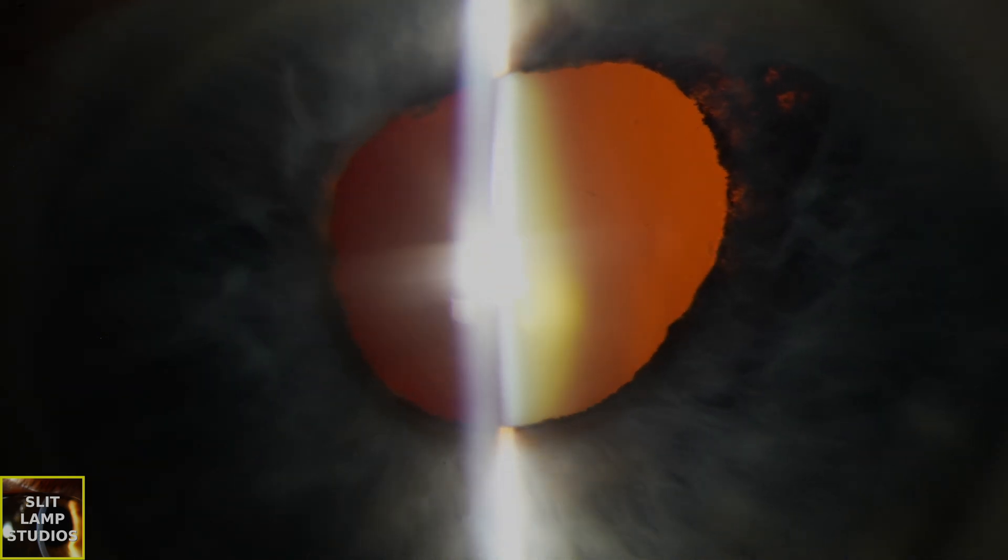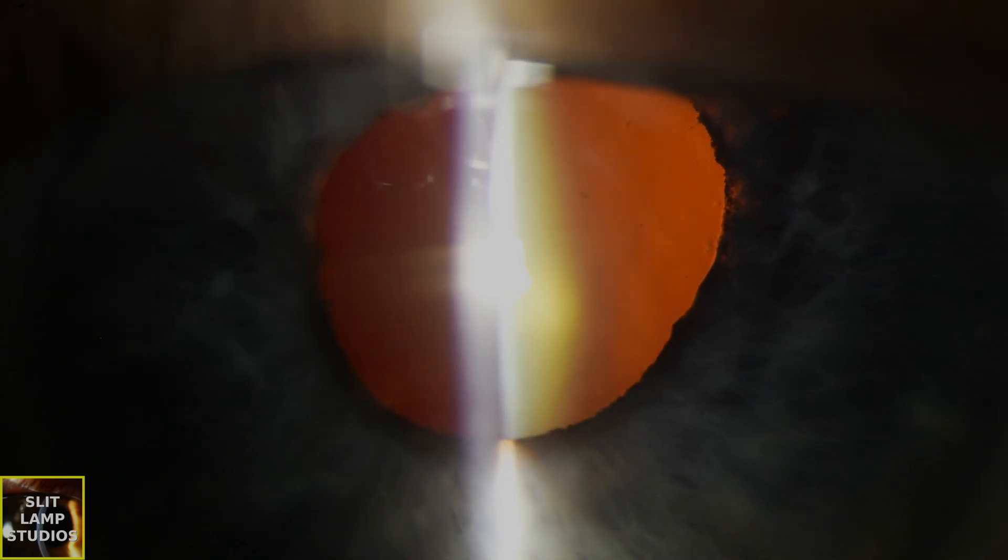If we look at the retroillumination, we can see that really moth-eaten appearance of the iris, that iris stromal atrophy superiorly there. And that's characteristic of herpetic infection.